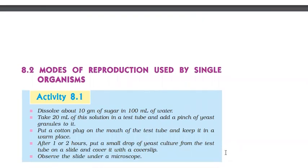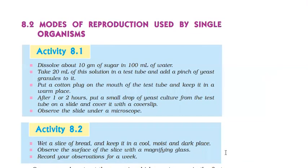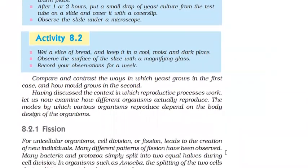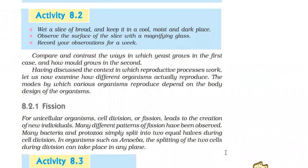There are two methods of reproduction: asexual and sexual. In asexual reproduction, a single parent is involved, there is no fusion of gametes, and young ones are identical to each other as well as to the parent. Asexual reproduction generally occurs in favorable environmental conditions when there is an abundance of food, and it is a faster method. Asexual reproduction has different types found in unicellular organisms, such as fission.